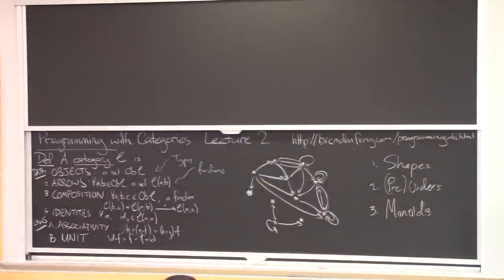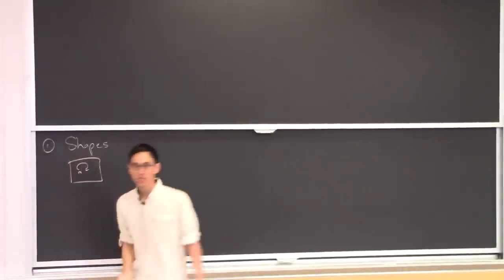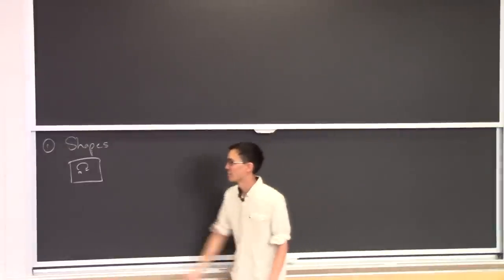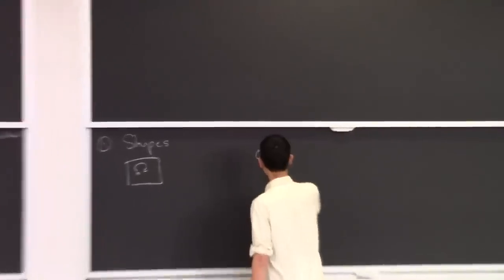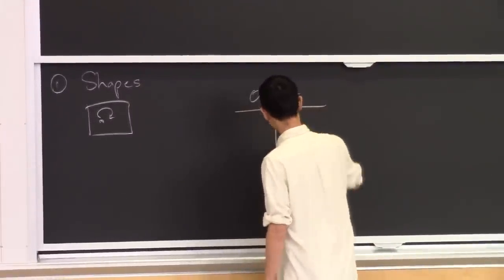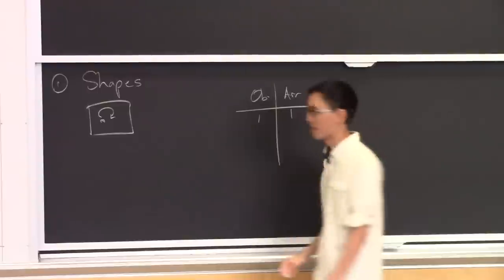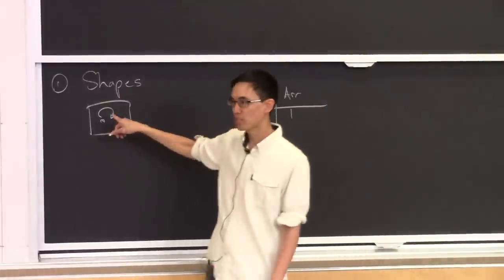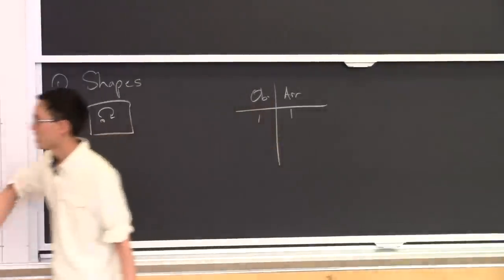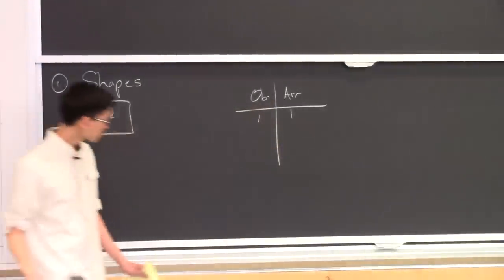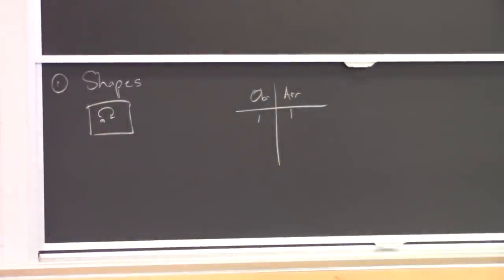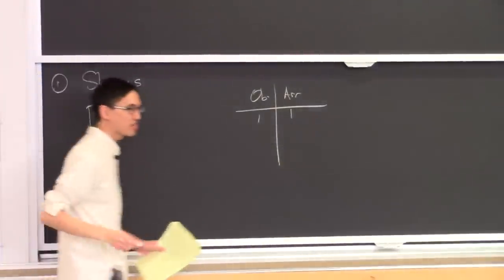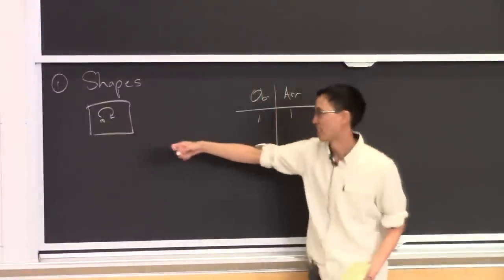So let's go through this. One: shapes. Here's a picture of a category. It has one object and one arrow. This is the visible part of a category, but a category also has this sort of invisible composition rule. I need to specify what the composition rule is to complete this data structure.